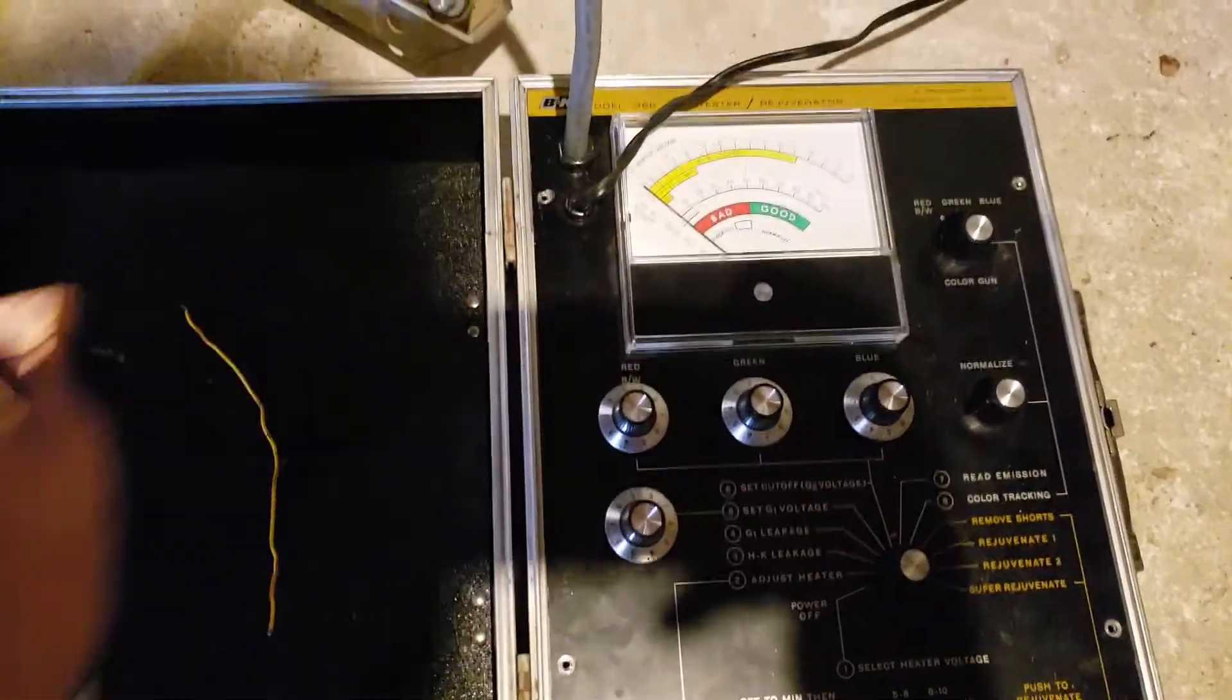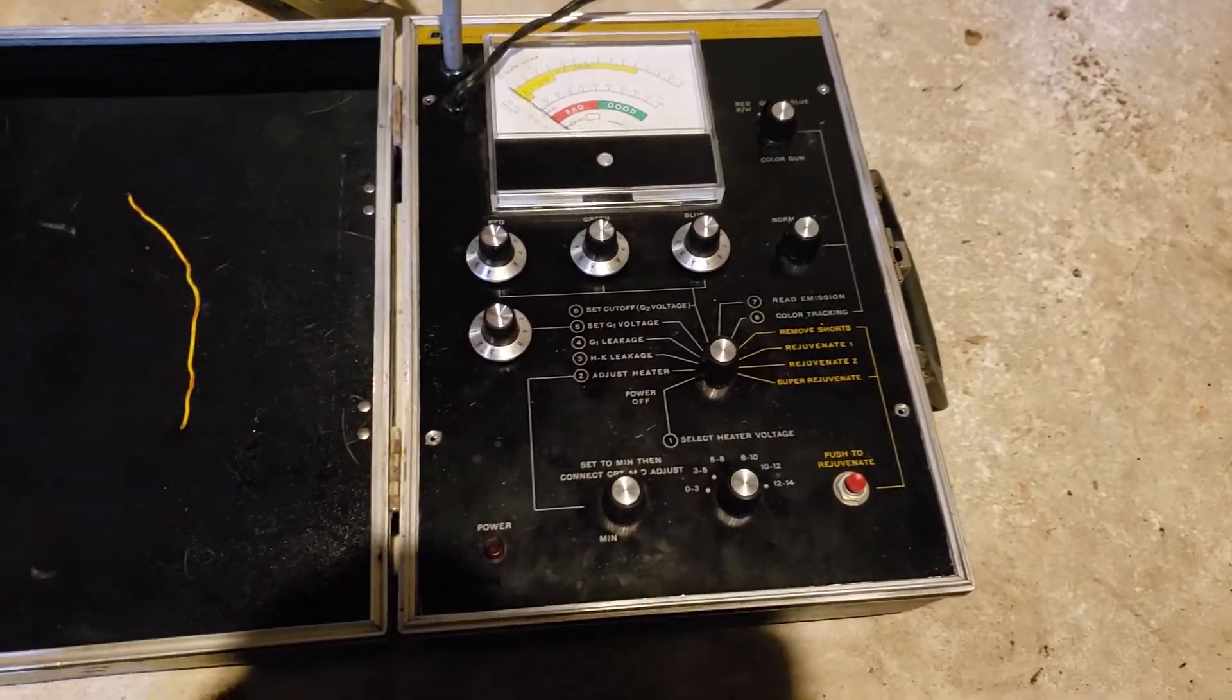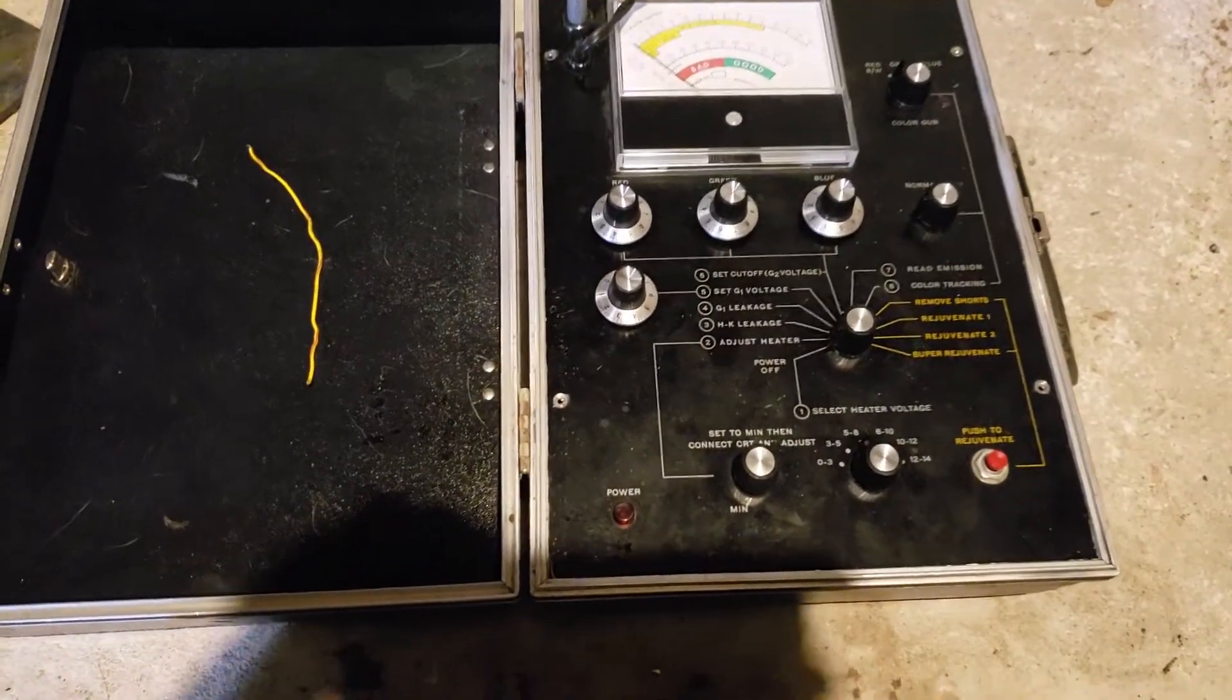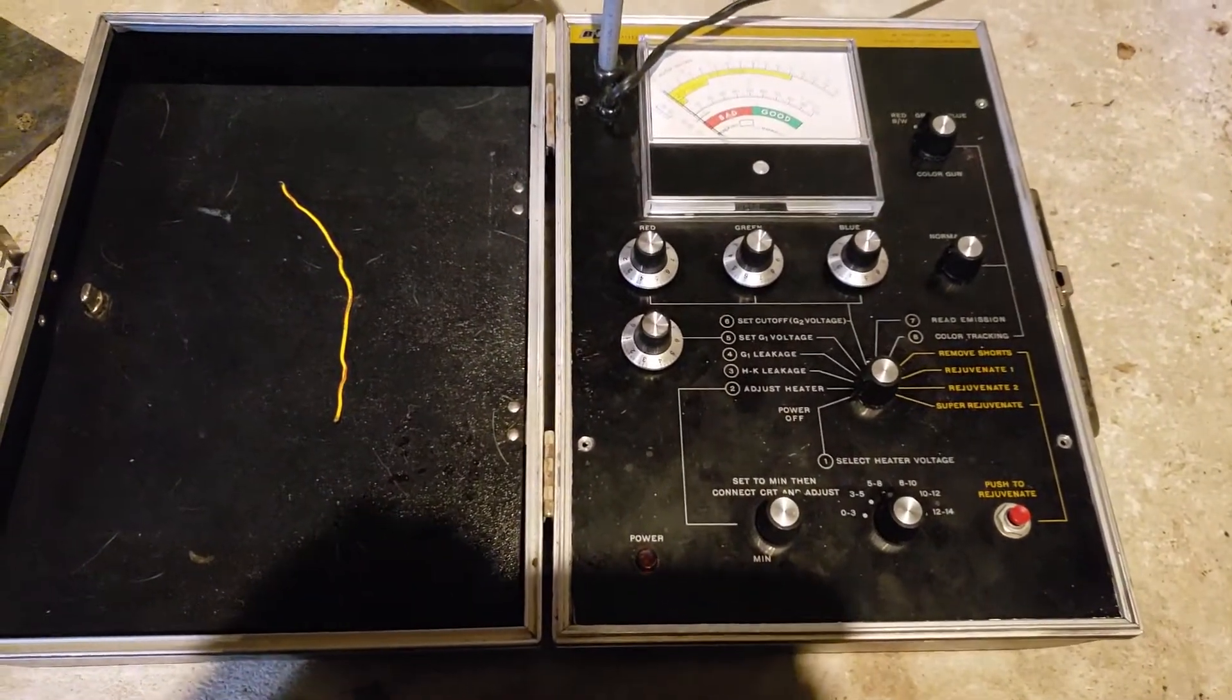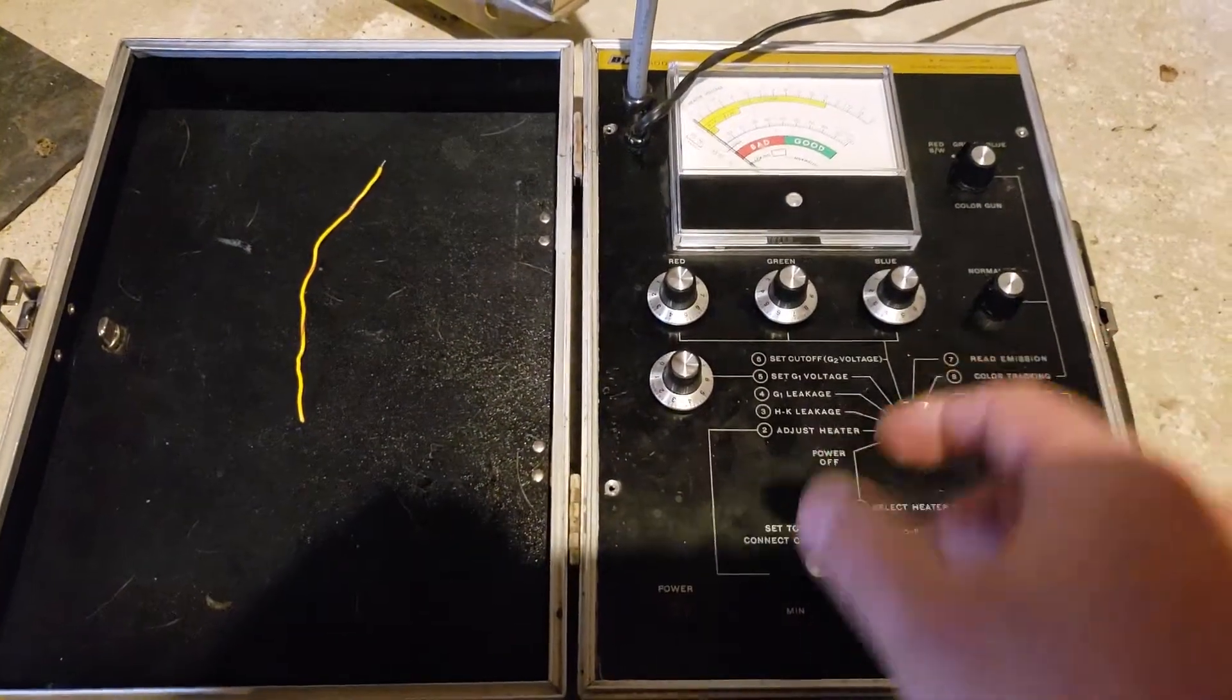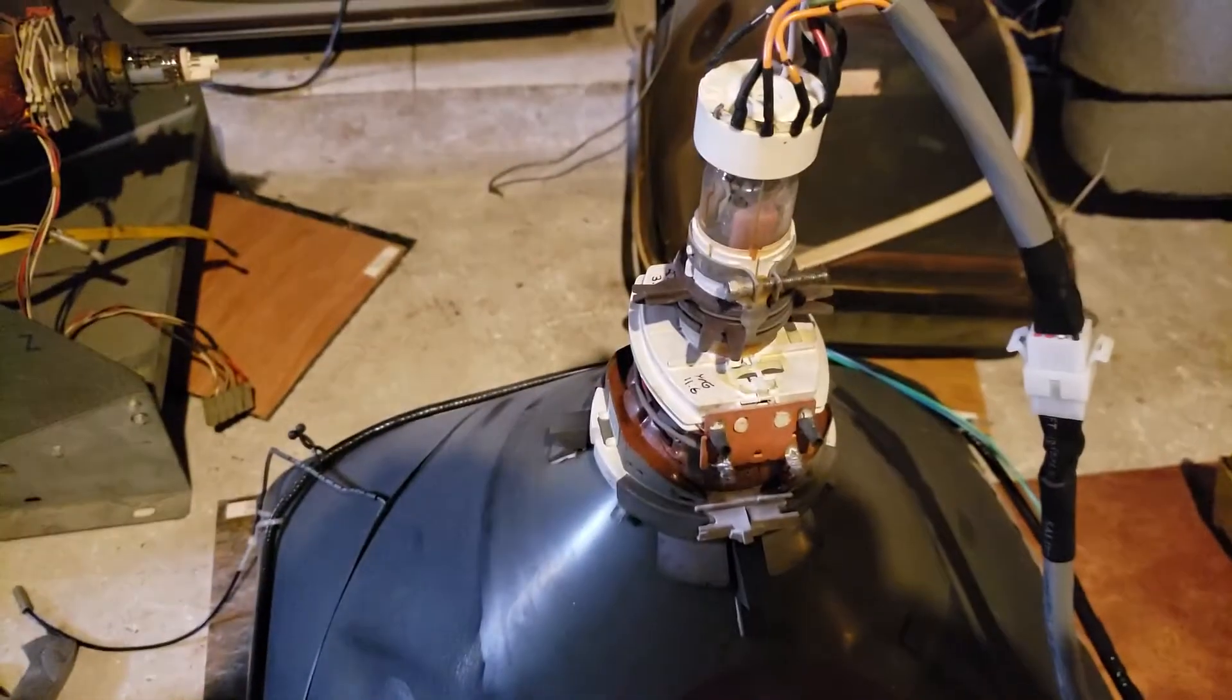All right, so here's a run through of my newly rebuilt BK 466. Sorry about the lighting, I can't really do much about that. It has the mod where I took the yellow wire out to disable the special circuit so you don't need that stupid doohickey thing. I currently have it hooked up to this tube.